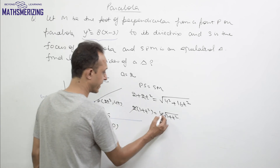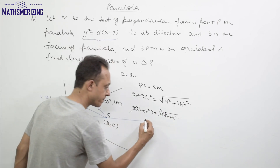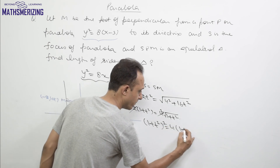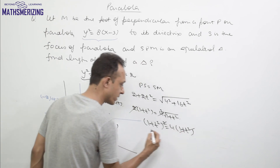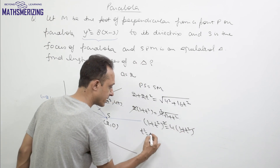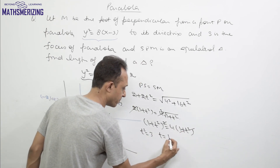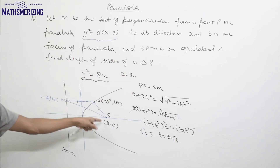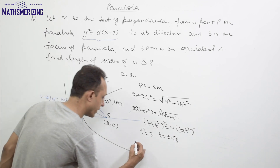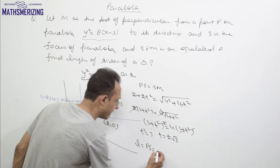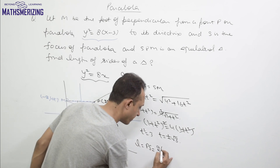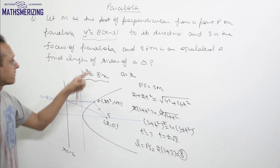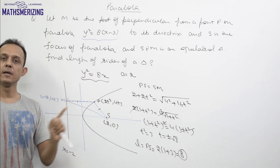Setting PS = SM: 2(1 + t²) = 4√(1 + t²). Squaring both sides gives (1 + t²)² = 4(1 + t²), so cancelling (1 + t²) yields 1 + t² = 4, giving t² = 3, so t = ±√3. The length of side equals PS = 2 + 2t² = 2 + 2(3) = 2 × 4 = 8. Therefore, the length of side of the equilateral triangle is 8 units.